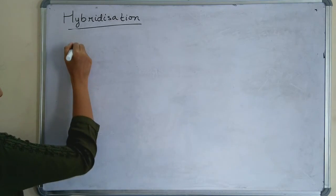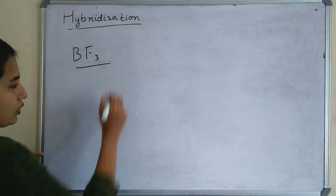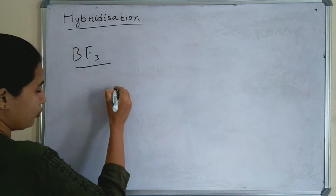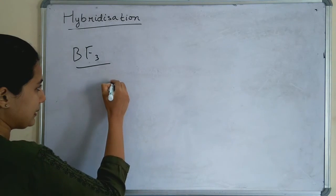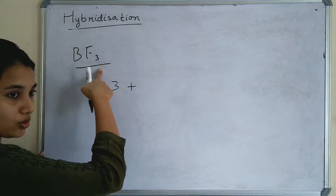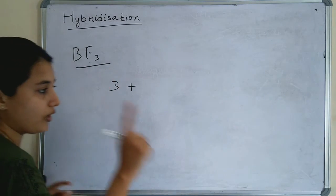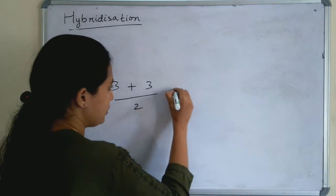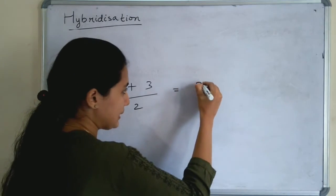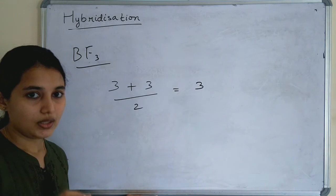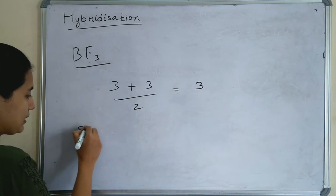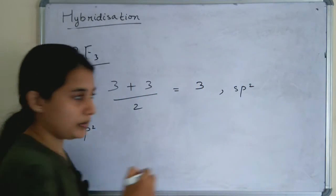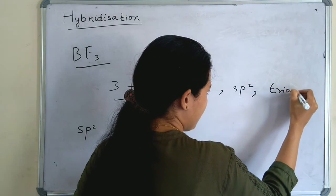Another example: BF3. The number of valence electrons of the central atom, boron, is 3. Plus the number of electrons donated by the ligand, fluorine — one fluorine gives one electron, so 3 fluorines give 3. So (3 + 3) / 2 = 6 / 2 = 3. If the number is 3, the hybridization is sp2.